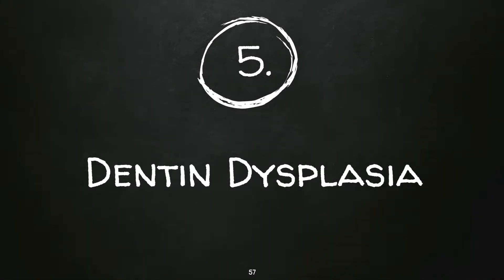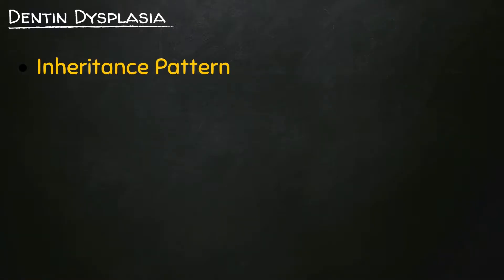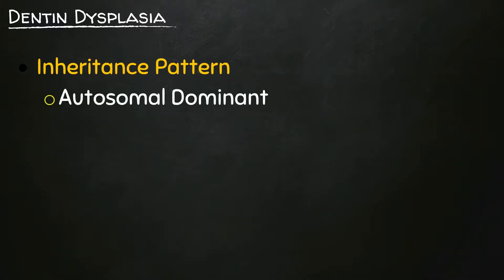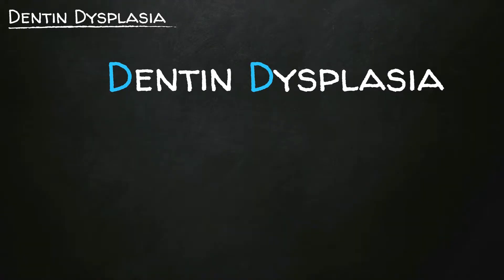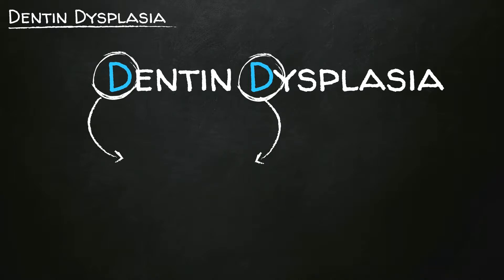Denton dysplasia. The inheritance pattern of Denton dysplasia is autosomal dominant. How can we remember that? This is quite simple. Let's look at the words 'Denton' and 'dysplasia' — they both start with the letter D. D stands for dominant.